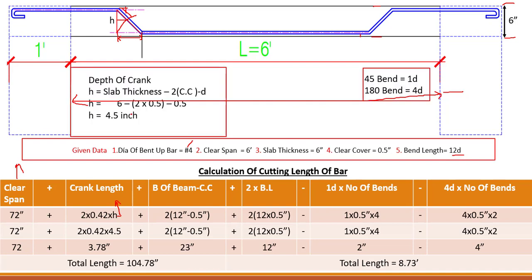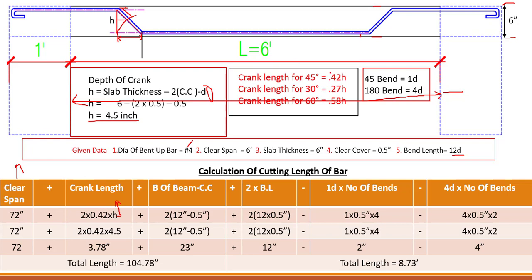The depth of crank equals slab thickness minus 2 × concrete cover (from both ends) minus the diameter of the bar. Putting in the values: 6 inches minus 2 × 0.5 inches minus 0.5 inches (dia of bar) gives H = 4.5 inches. So if you have a 45-degree angle, you use 0.42 × H for the crank length.